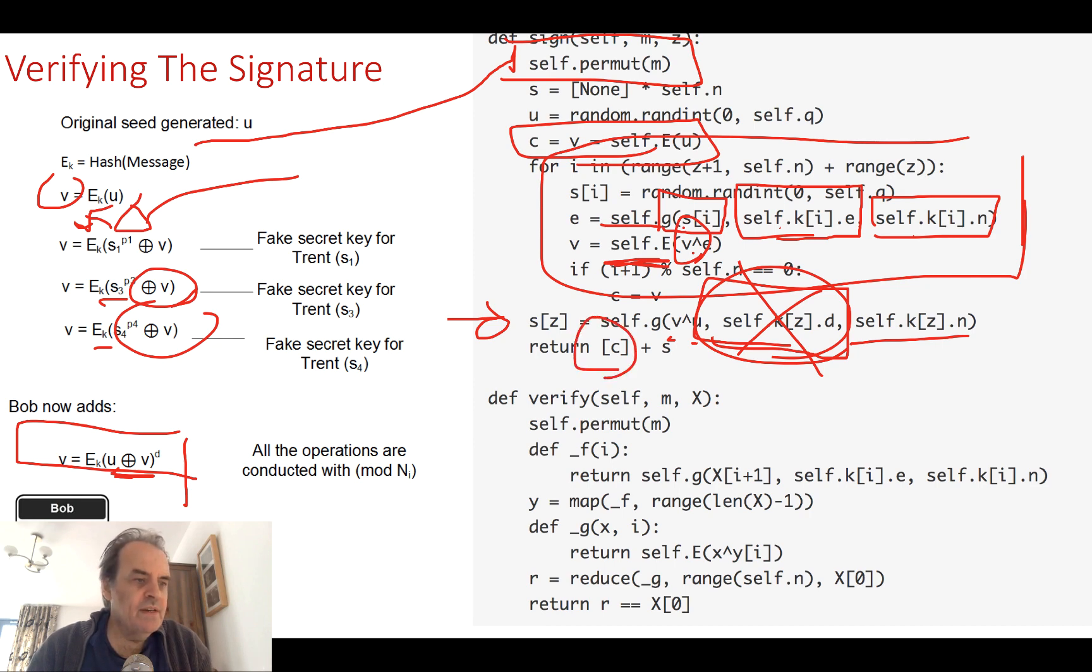So the moduluses will be known, the public keys will be known. This one here will not be known. So we send out the cipher or the signature, the resultant signature, and also each of the secret keys. Secret keys are random values apart from Bob's, which is a trapdoor function.